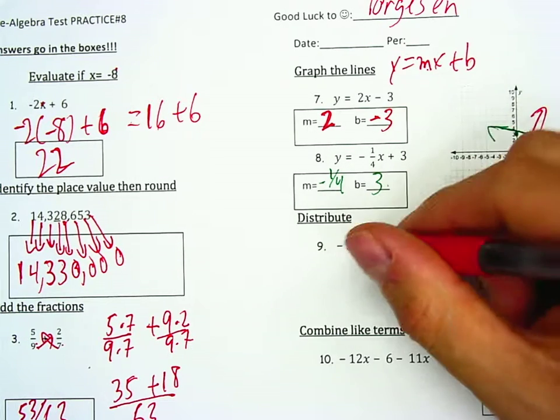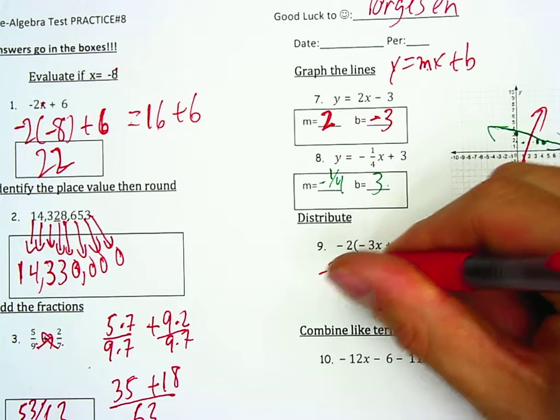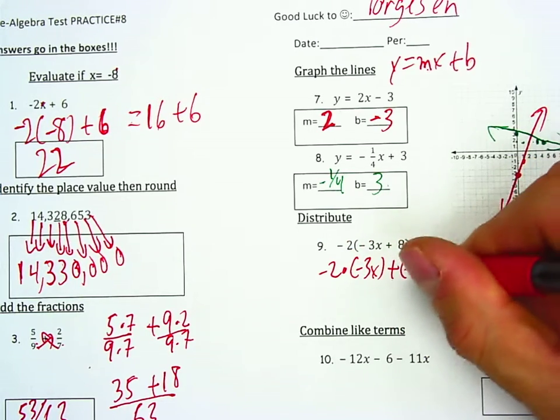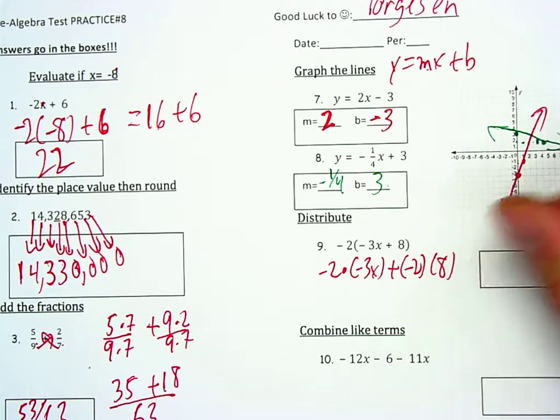Distribute. So here I'm going to take negative 2 times by negative 3x plus negative 2 times by 8. So this will be positive 6x minus 16 in terms of value.